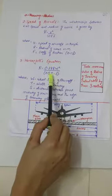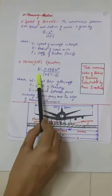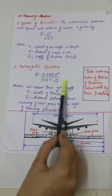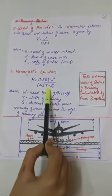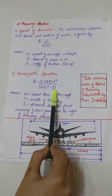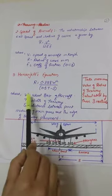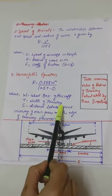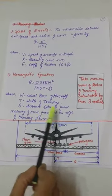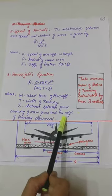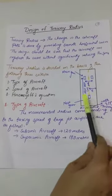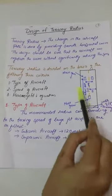The next is the Horenjev's equation, the third criteria, where R = 0.388 W² / (0.5T − S). Capital W is the wheelbase of the aircraft. T is the width of taxiway. S is the distance between the point midway of main gears and the edge of taxiway pavement.